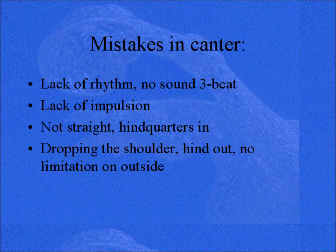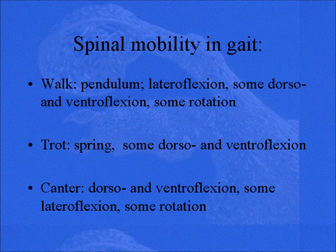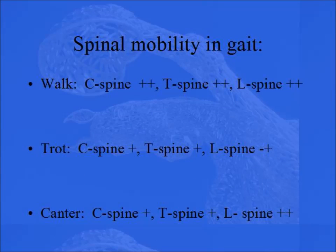It's important to recognize those things. Quick recapitulation: in the walk it's a lot of lateral flexion, some dorsal and ventral flexion, and some rotation. The trot doesn't really move that much, and in the canter we have again dorsal and ventral flexion, some lateral flexion, and some rotation. Looking at a comparison across areas, you can see that the walk has a lot of neck and spine movement, the trot has not much movement in all the different parts, and in the canter you can see especially more activity in the lumbar spine.